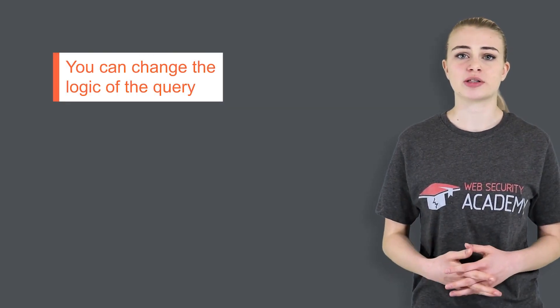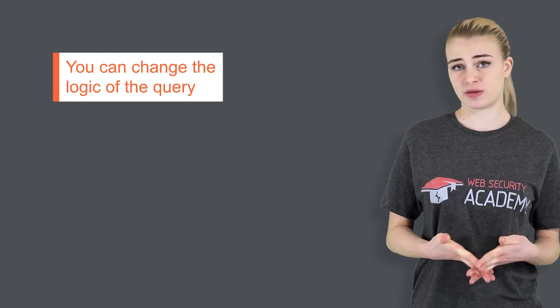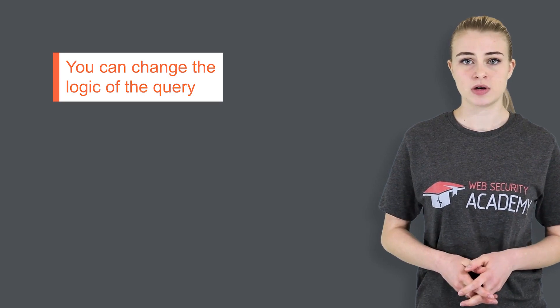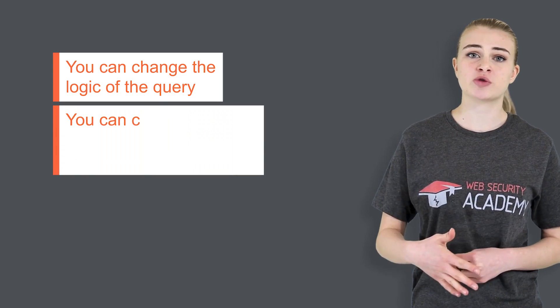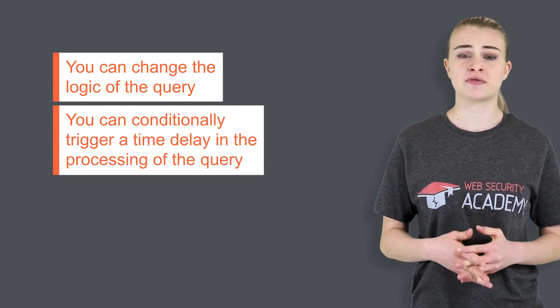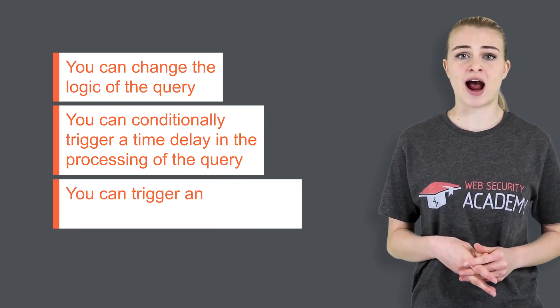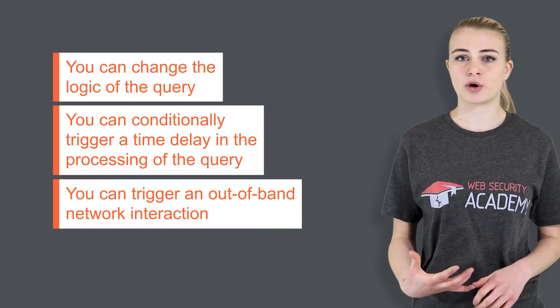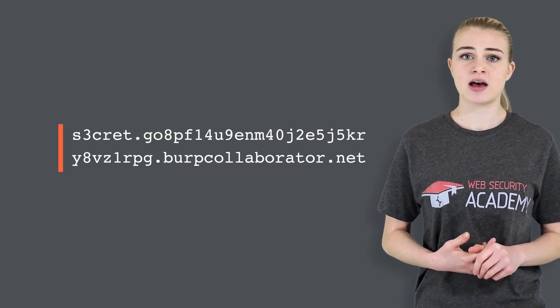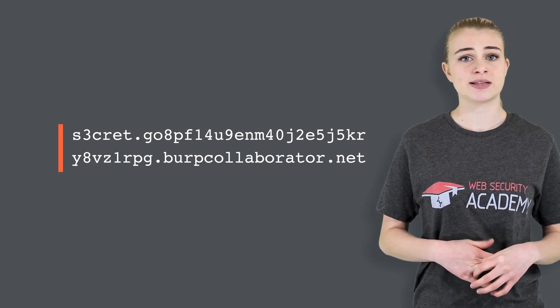Many instances of SQL injection are blind vulnerabilities. This means that the application does not return the results of the SQL query or the details of any database errors within its responses. Blind vulnerabilities can still be exploited to access unauthorized data, but the techniques involved are generally more complicated and difficult to perform. Depending on the nature of the vulnerability and the database involved, a variety of techniques can be used. You can change the logic of the query to trigger a detectable difference in the application's response depending on the truth of a single condition — this might involve injecting a new condition into Boolean logic, or conditionally triggering an error such as a divide by zero. You can conditionally trigger a time delay in processing, allowing you to infer the truth of a condition based on response time. You can also trigger an out-of-band network interaction, which is extremely powerful and works in situations where other techniques do not — often you can directly exfiltrate data via the out-of-band channel, for example by placing data into a DNS lookup for a domain that you control.